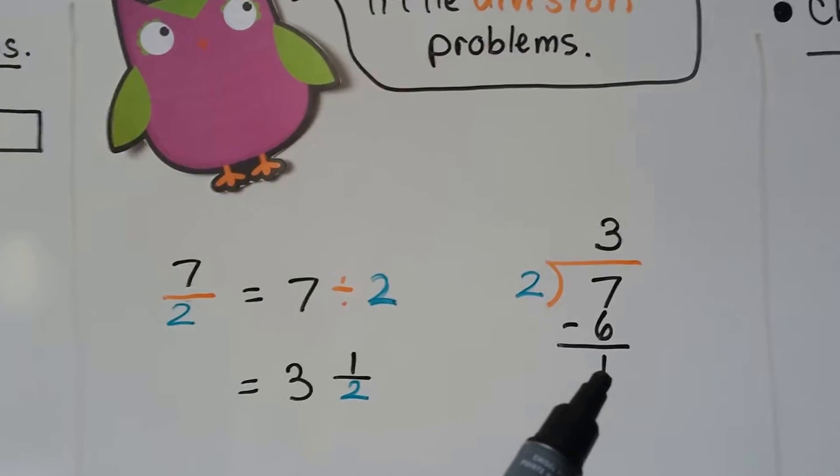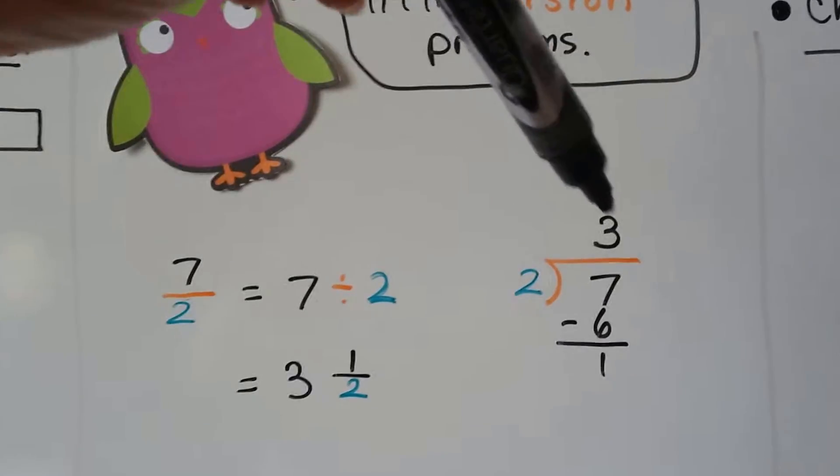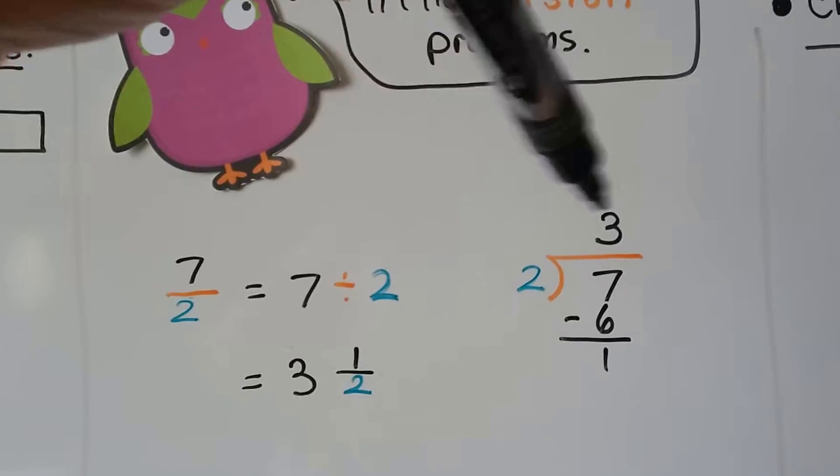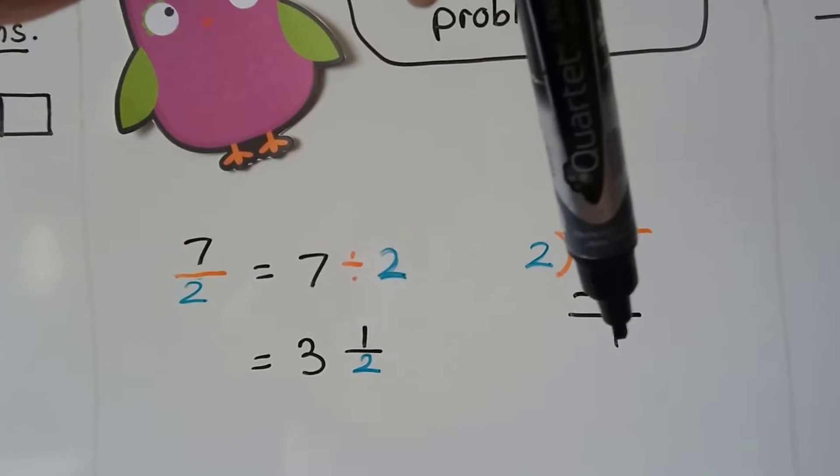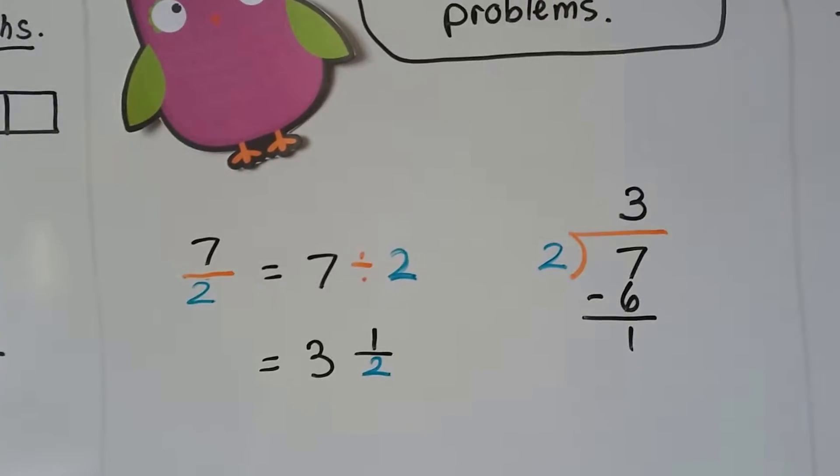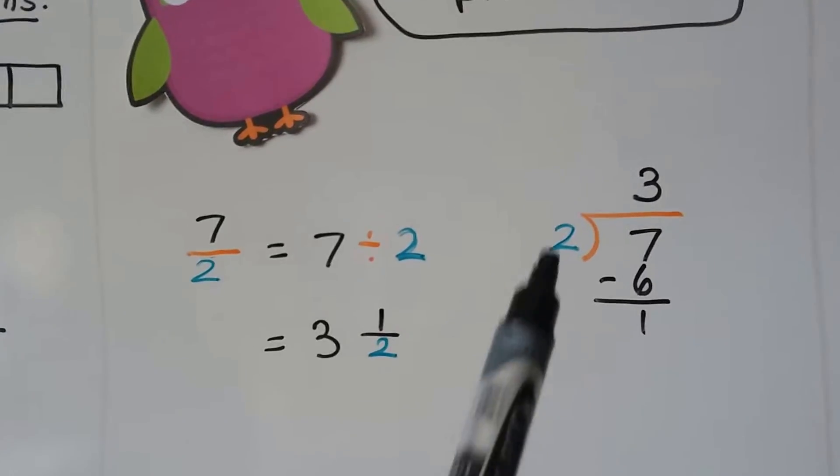We subtract the 6. We have 1 left over, and this quotient is the whole number 3, and this 1 remainder is the numerator, and that 2 is the denominator.